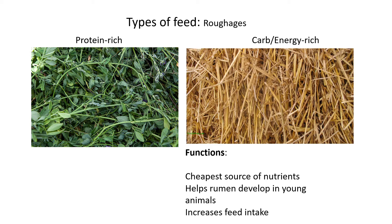The farmer usually just uses the field grasses. If he doesn't have them, he has to cultivate the soil and plant specific plant types, but even then it is still the cheapest source of nutrients — much cheaper than concentrates. Secondly, roughages help the rumen develop in young animals, especially with cows.